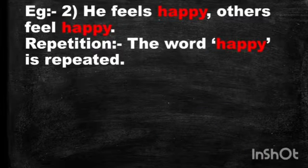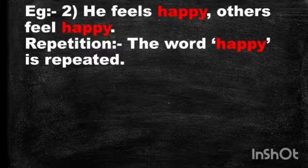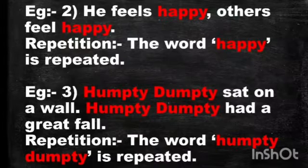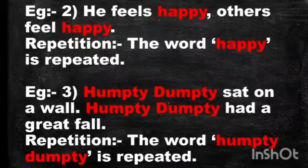Example number two: 'He feels happy. Others feel happy.' The given sentence is repetition because the word 'happy' is repeated. Example number three: 'Humpty Dumpty sat on a wall. Humpty Dumpty had a great fall.' The given sentence is repetition because the words 'Humpty Dumpty' are repeated in the sentence.